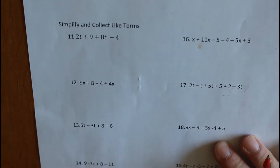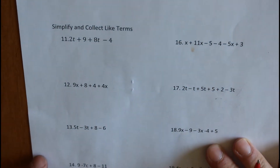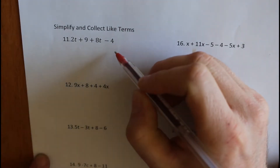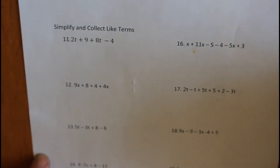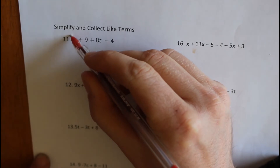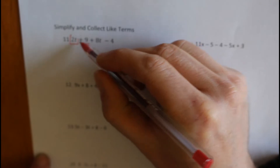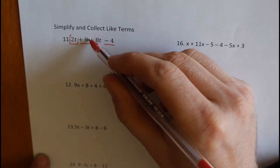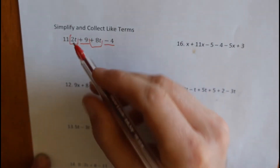So on the back side, we have a bunch of different questions. Remember, you're just collecting like terms and then adding them together. So for example, this is a like term, this is not a like term — that's a different one. These two are like terms, we're going to underline the likes, and these two are like terms.